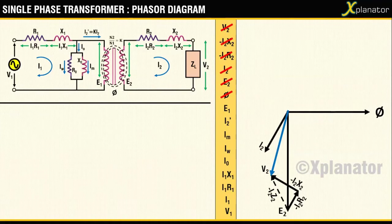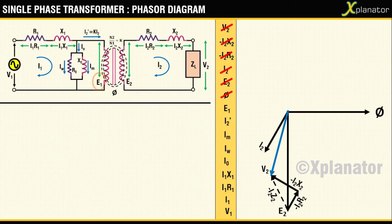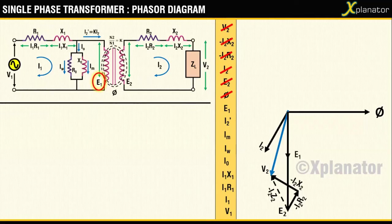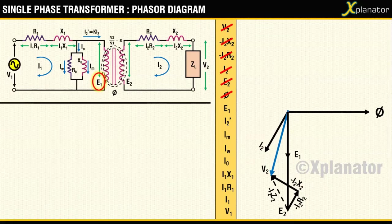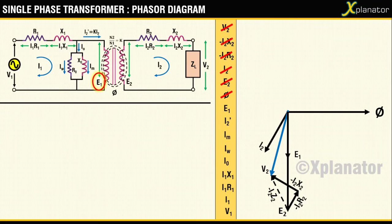Moving over to the primary side, the first vector that has to be drawn is E1. Draw it the same way as E2, that is in the minus y direction, but the only difference that you will see here is that E1 has been assumed to be lower than E2, so the length of E1 will be slightly smaller.